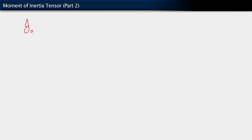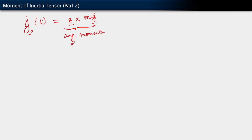We see that J₀(t) is the angular momentum of the center of mass, plus the integral over omega_t of ρ multiplying that last term we had — which we can carry over from that expression involving the BAC-CAB expansion.